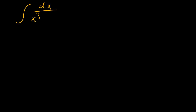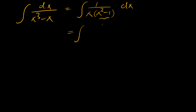This problem can be re-expressed by pulling x out in the denominator, leaving x times (x squared minus 1). Factorizing further using the difference of two squares — x squared and 1 squared — we get x times (x minus 1) times (x plus 1).